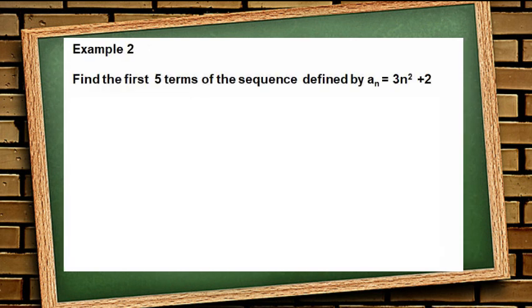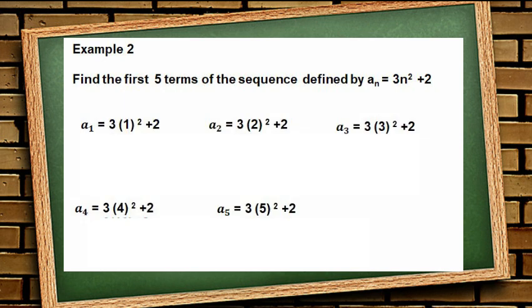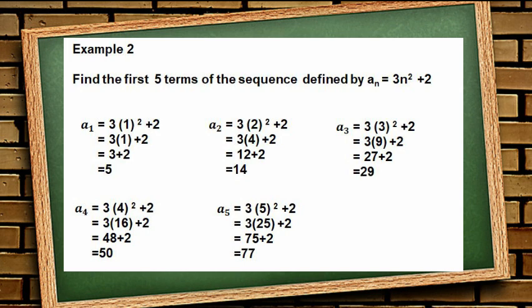Example number 2: Find the first 5 terms of the sequence defined by a of n is equal to 3n squared plus 2. To get the first 5 terms, we just substitute 1, 2, 3, 4, and 5 to the equation, then solve. The first 5 terms are 5, 14, 29, 50, and 77.